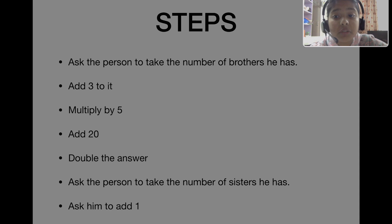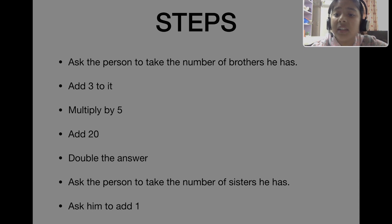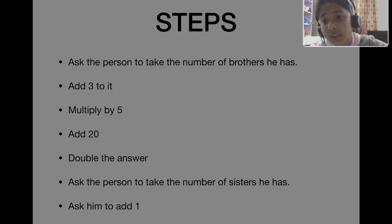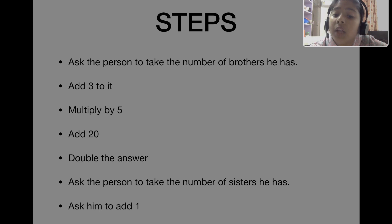These are the things you need to ask the person from whom you want to know how many siblings they have. Ask the person to take the number of brothers — if none, take zero — then add three to it. So zero plus three is three. Then multiply three by five, which is fifteen. Then add twenty to it, so fifteen plus twenty equals thirty-five.